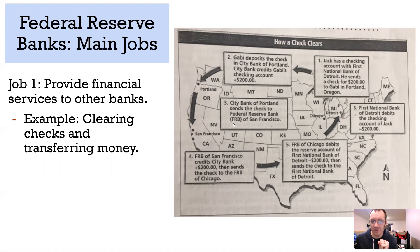Here's how it works: Citibank in Portland sends a check to the Federal Reserve in San Francisco. The Federal Reserve gives Citibank $200 to reimburse them for the $200 they gave Gabby.